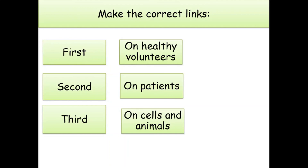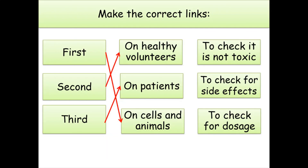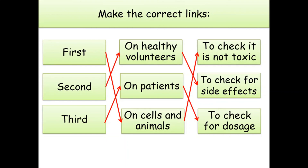To summarise the three stages of drug testing: first, testing on cells and animals — to check the drug is not toxic; second, testing on healthy volunteers — to check for side effects; and third, testing on patients — to check for the correct dosage.